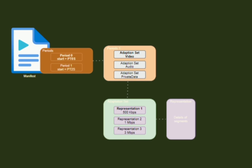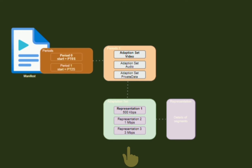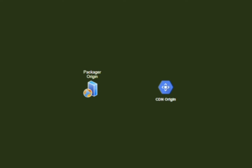The packager also creates a manifest file. The manifest file contains: first, the video chunk duration; next, an adaptation set for each of the video and audio chunks — each adaptation set represents the different bitrates supported by your OTT platform; and finally, each representation has the properties of that particular segment.